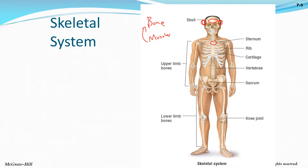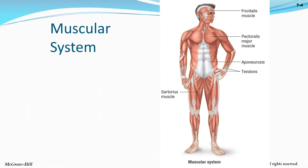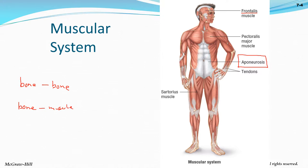The sternum has three parts. Your pecs — the pectoralis — are your chest muscles. Ligaments connect bone to bone. The muscle there is the frontal muscle, and the pectoralis looks like a mohawk shape.